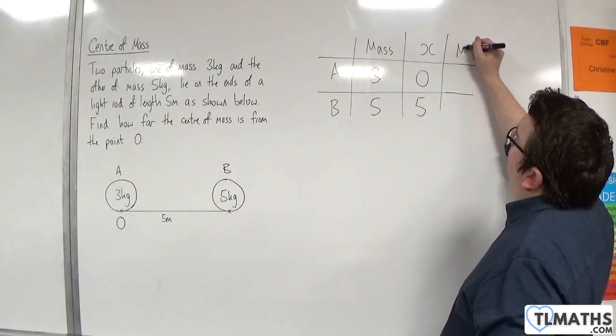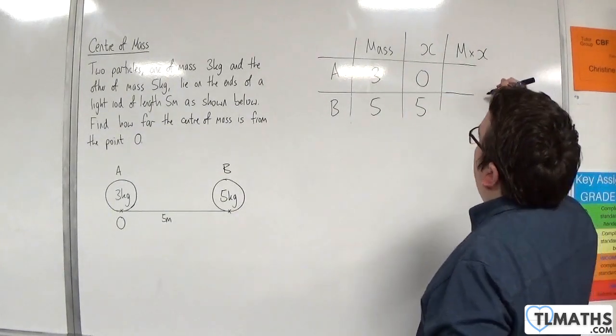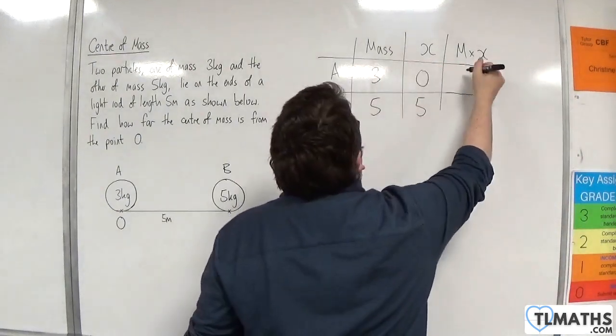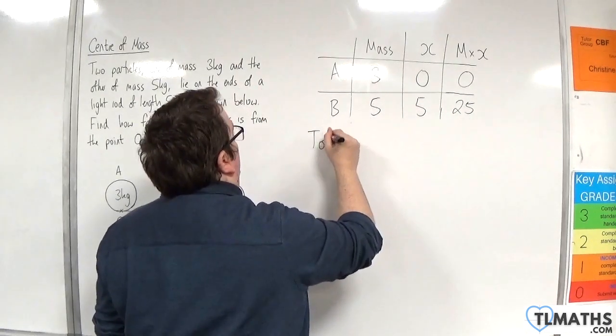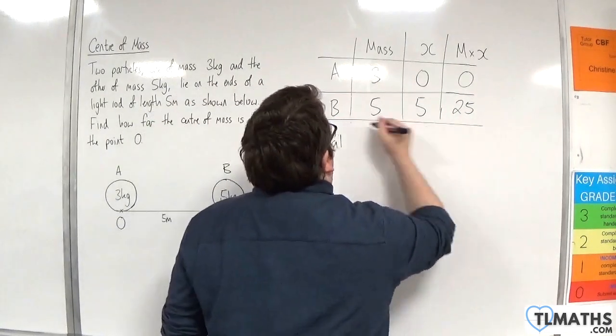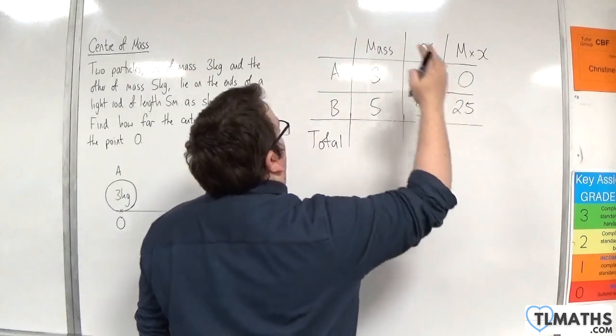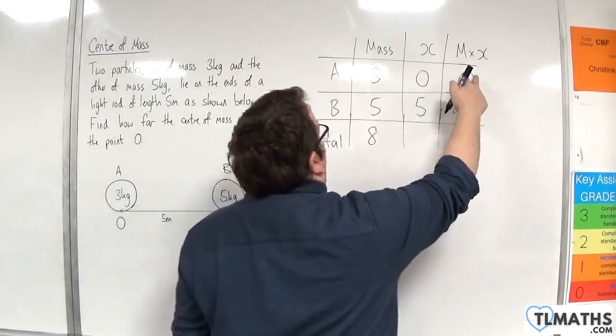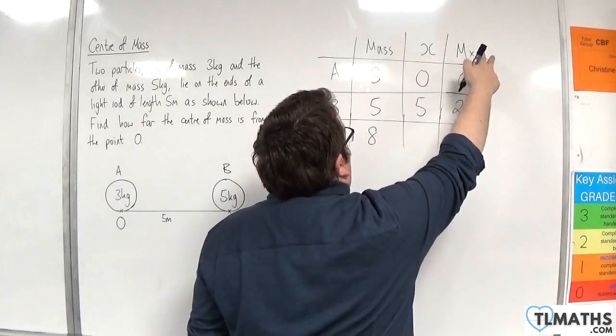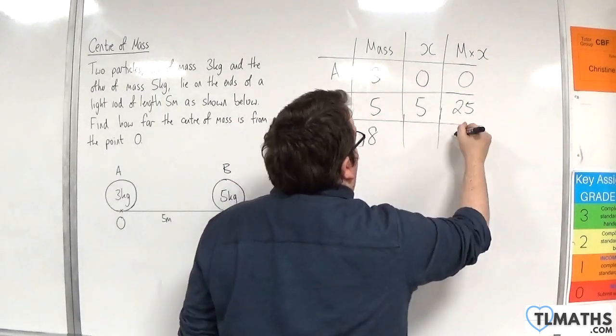So, we're going to multiply the mass by that distance. And we're going to get 0 and 25. So, the total mass that we have is 8. The total of the distances times by their masses is 25.